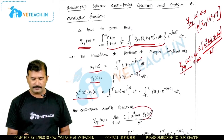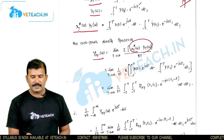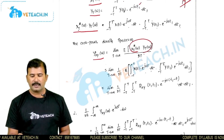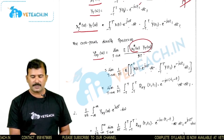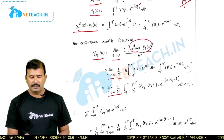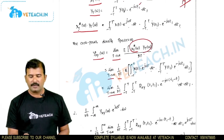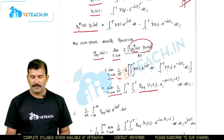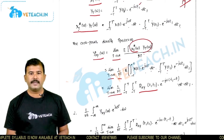We have already evaluated the product. Now applying the expectation operator, we take the expected value of x(t)·y(t₁), which is the cross correlation function R_xy(t, t₁), and combine it with the remaining exponential terms e^(−jω(t₁−t)) dt dt₁. The full expression becomes: limit T→∞ of 1/2T times the double integral of R_xy(t, t₁) e^(−jω(t₁−t)) dt dt₁.